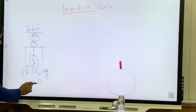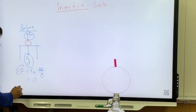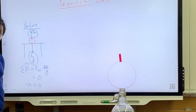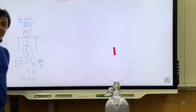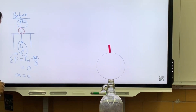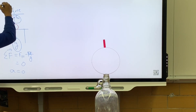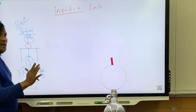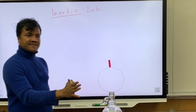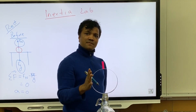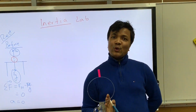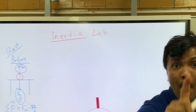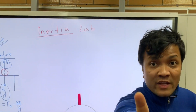Since there is no net force, there is no acceleration. If there is no net force, there is no acceleration. So the object is at rest. We explain why the object is at rest: object is at rest because there is no acceleration, and there is no acceleration because there is no net force.